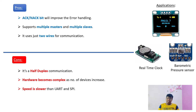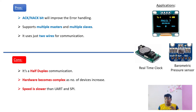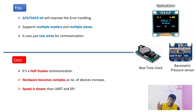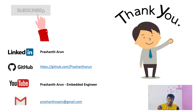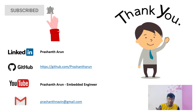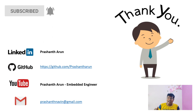I2C finds applications in many peripherals, including OLED displays, real-time clock peripherals, and barometric pressure sensors. This concludes the overview of I2C communication protocol and the three communication protocols covered today. If you like this video, please hit the like button, subscribe to the YouTube channel, and hit the bell button. Have a nice day!